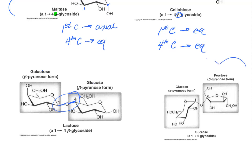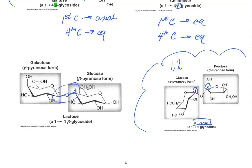There is another type of linkage: a 1,2 linkage that we see here between glucose and fructose, which happens to make sucrose. This is a 1,2 linkage because we're connecting the first position of one monosaccharide with the second position of the other. Let's go ahead and look at polysaccharides on the next page.